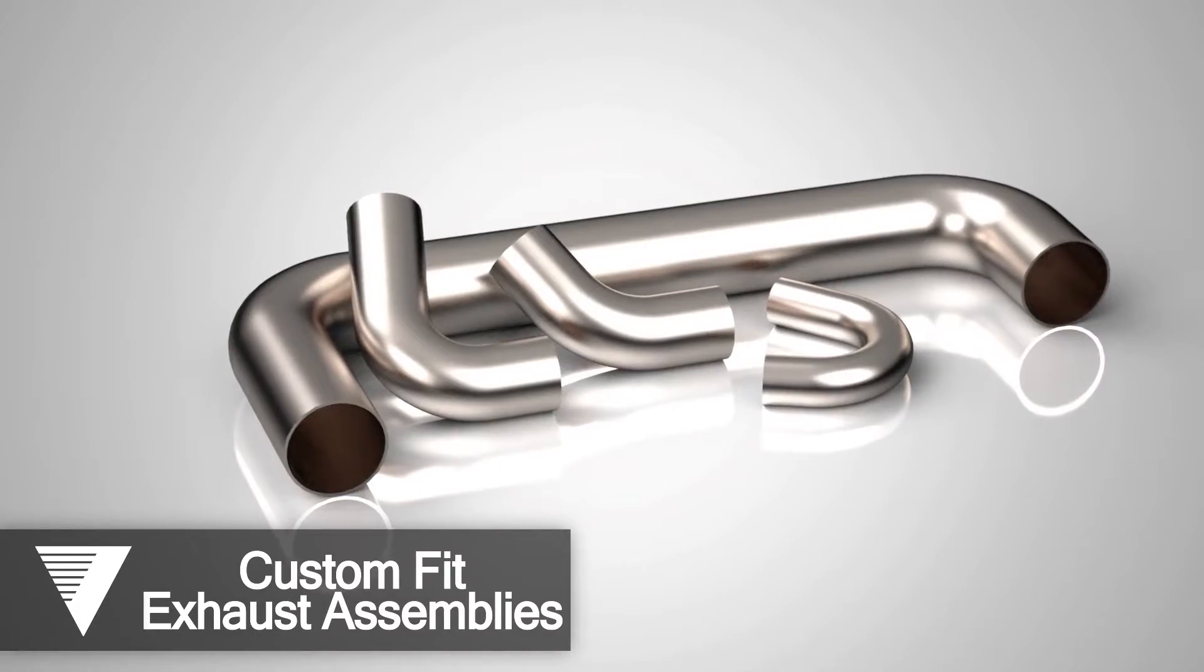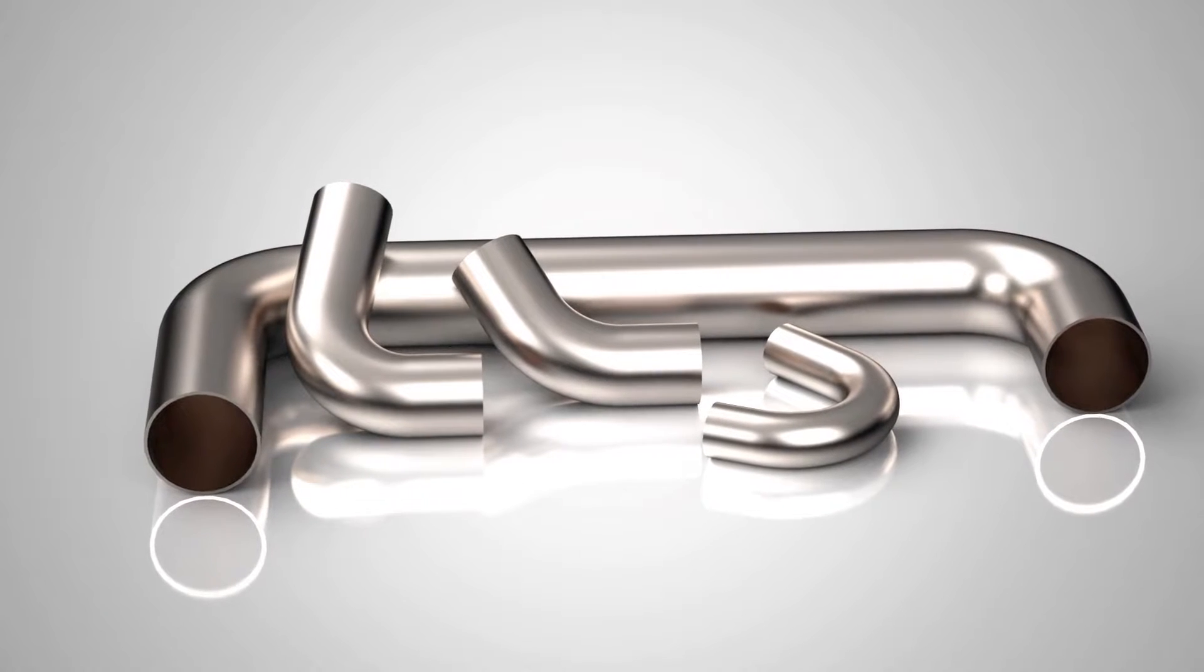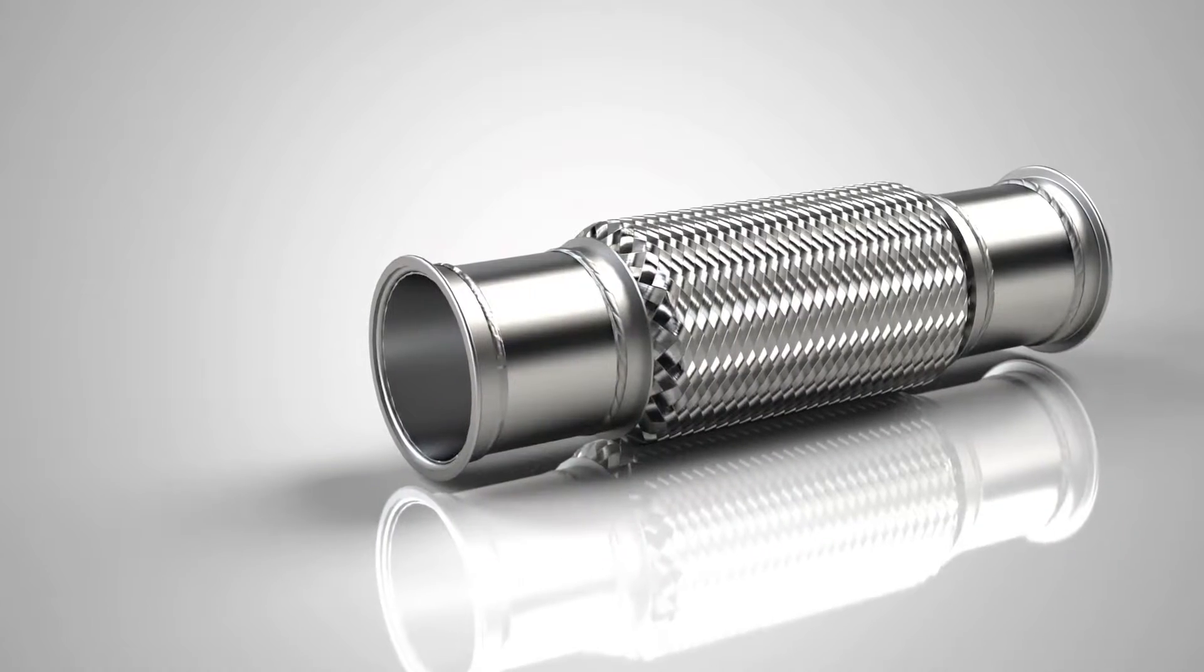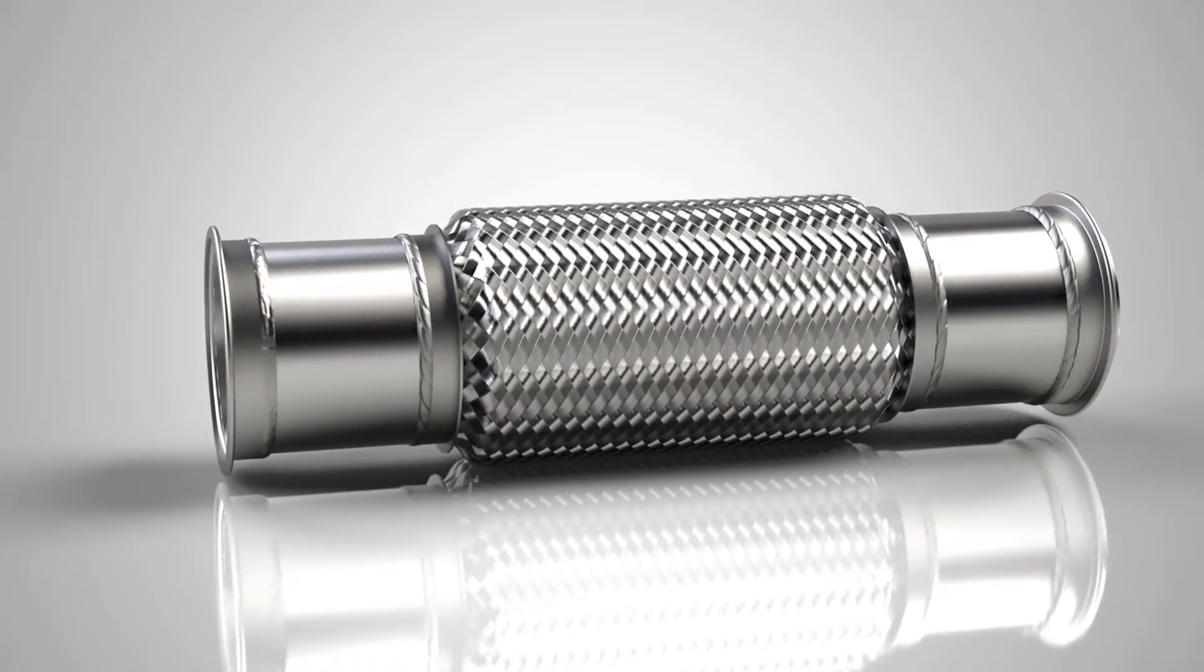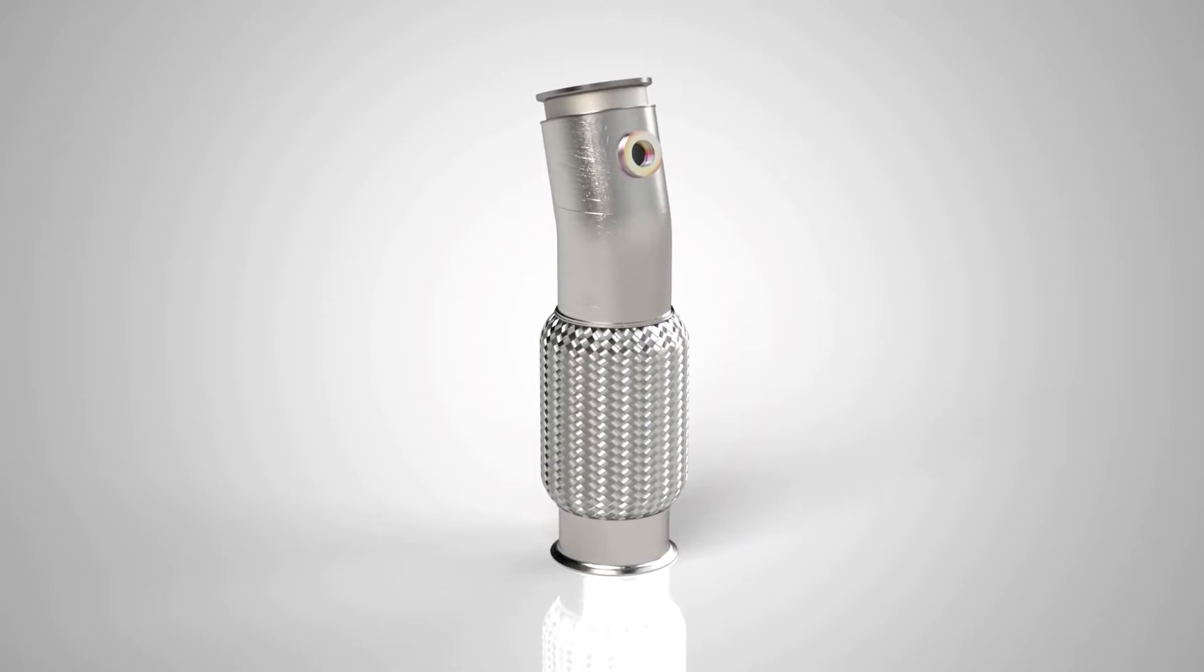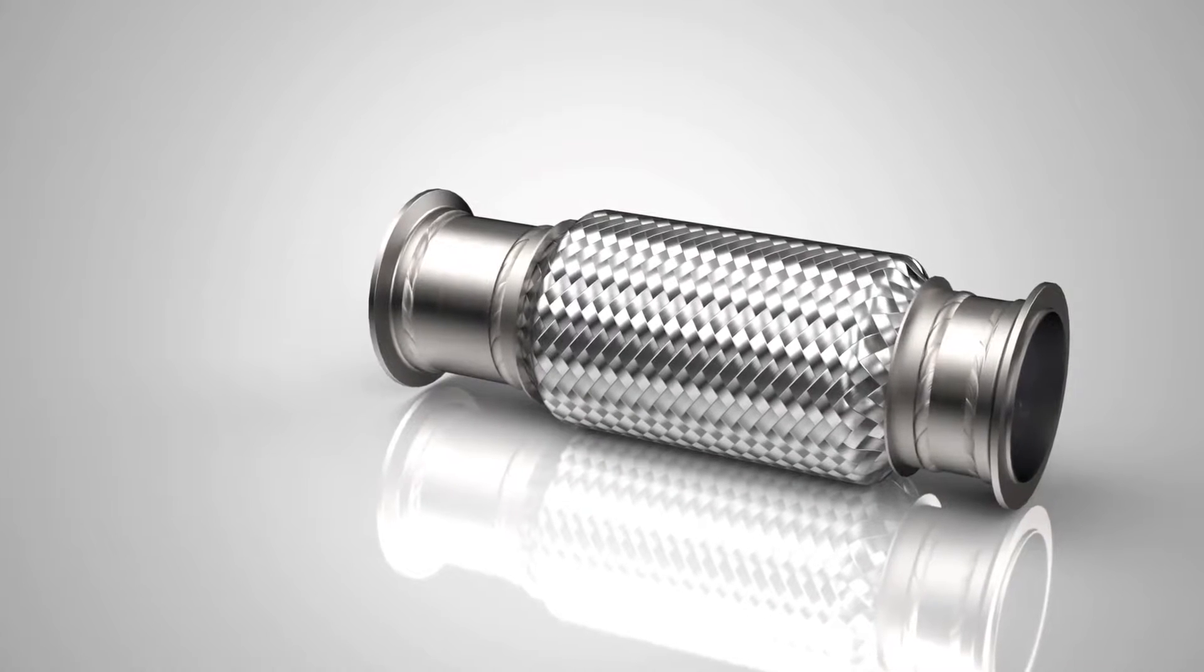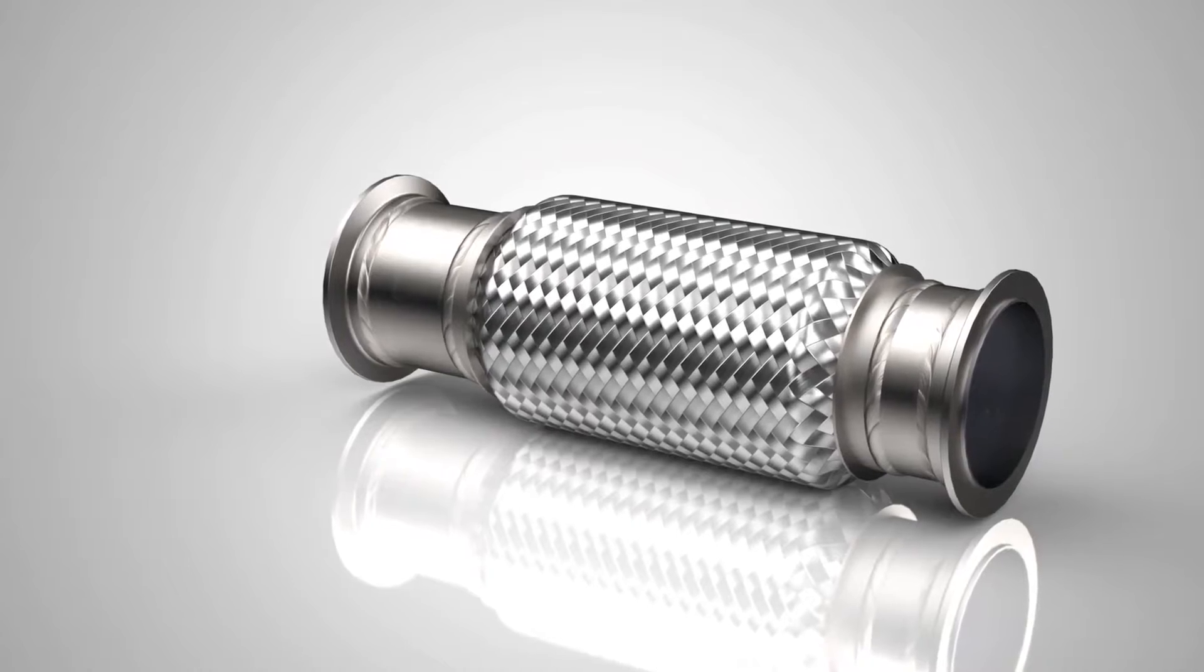Our 3D printer enables us to quickly and effectively print test parts and fixtures with an accuracy of up to five thousandths of an inch. This, in combination with our on-site coordinate measuring machine and portable 3D scanner, ensures every part delivered is exactly to your specification. Our team is ready to help design and engineer your custom direct-fit exhaust assembly to your specifications while meeting your needs with cost-effective solutions.